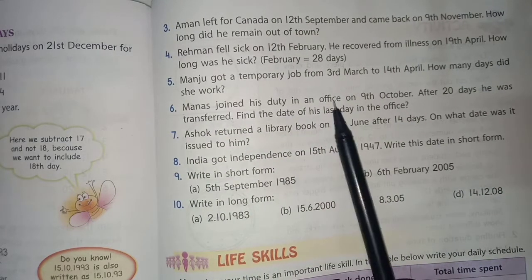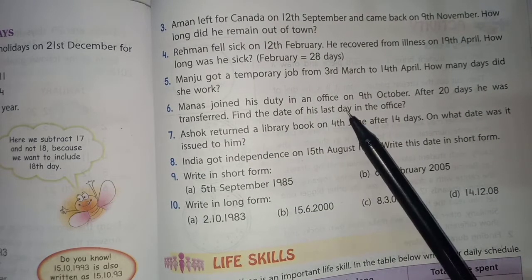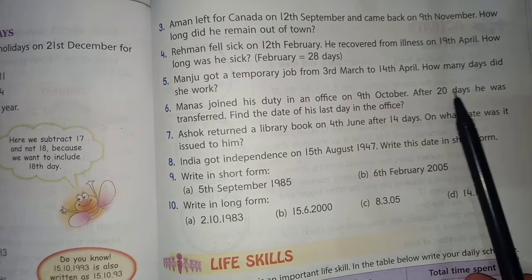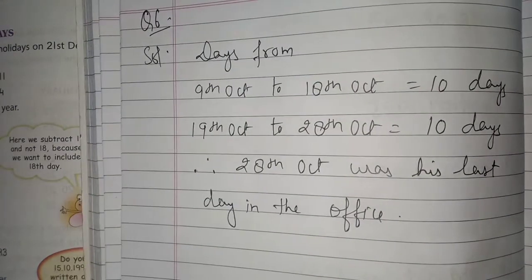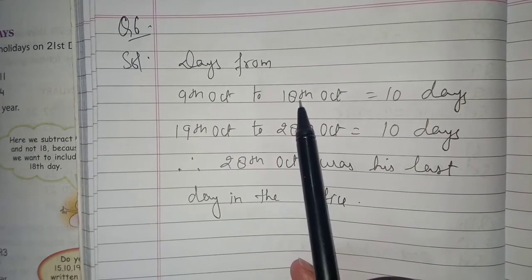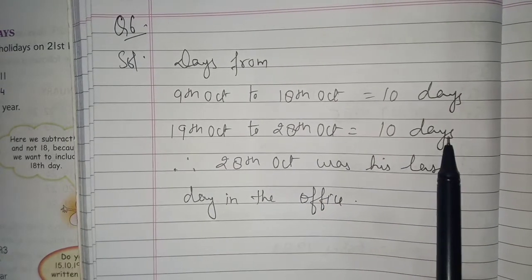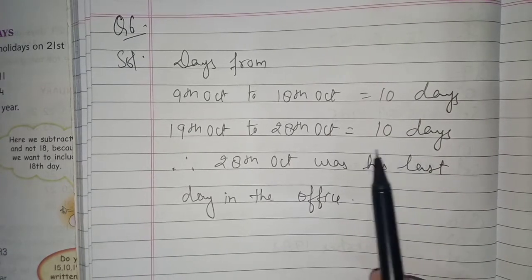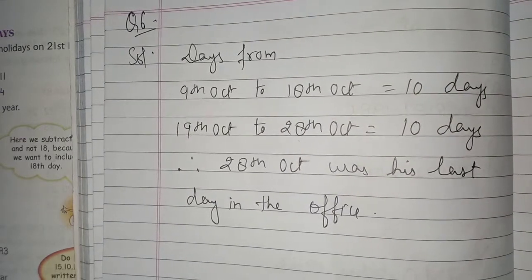Question number six: Manas joined his duty in an office on 9th October. After 20 days he was transferred — find the date of his last day. Days from 9th October to 18th October: 10 days. From 19th October to 28th October: 10 days. 10 plus 10 equals 20 days, so 28th October was his last day in the office.